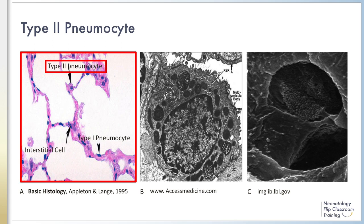Type 2 pneumocytes, denoted by the arrows in image A, are located in the walls of the alveoli and produce and secrete surfactant material. Unlike type 1 cells, which are post-mitotic and no longer capable of undergoing mitosis, type 2 cells have retained the ability to divide to form either type 1 or type 2 pneumocytes in response to normal turnover, disease, or trauma.